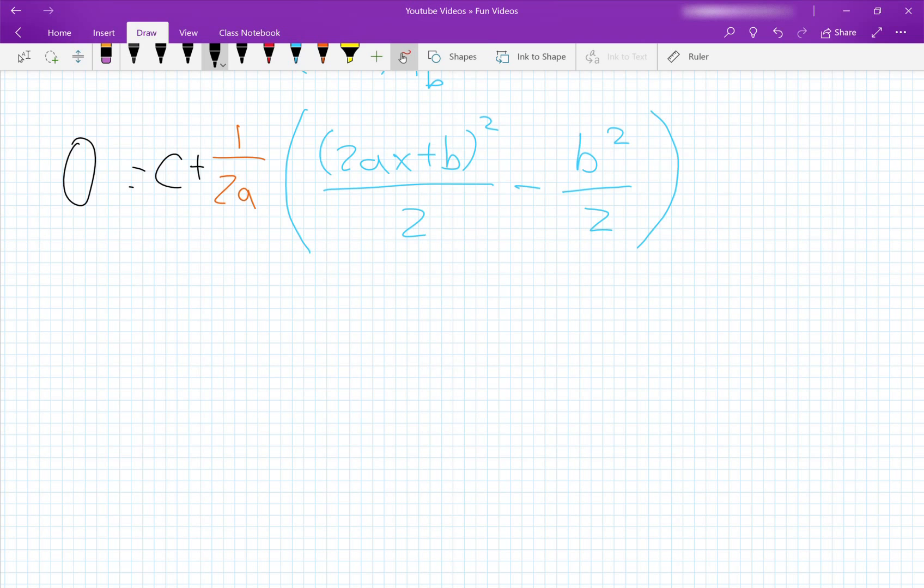So let's simplify everything. c plus 1 over 2a times (2ax plus b) squared minus b squared.